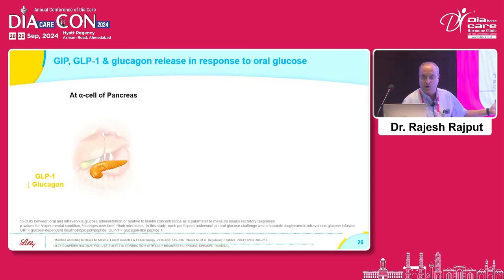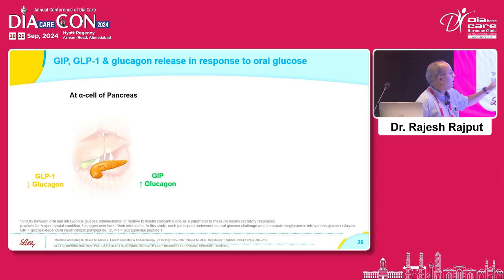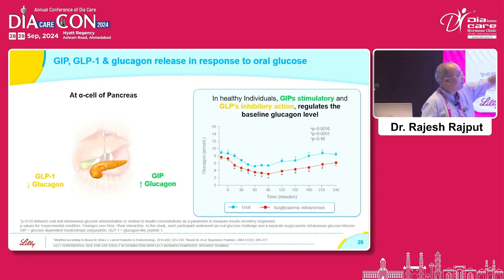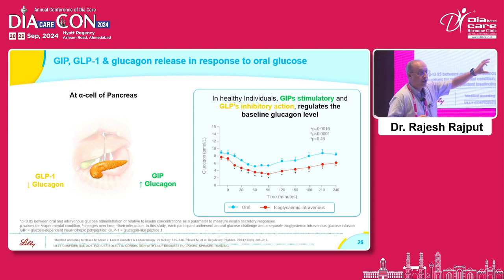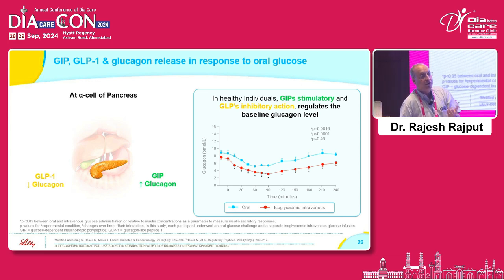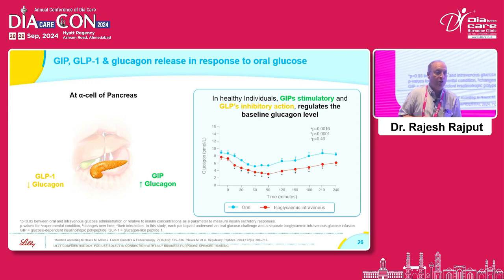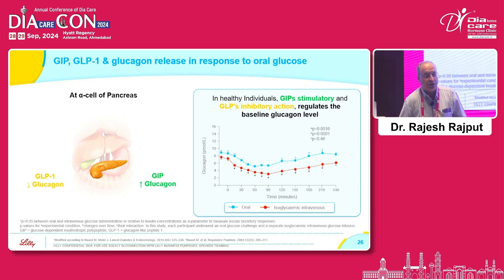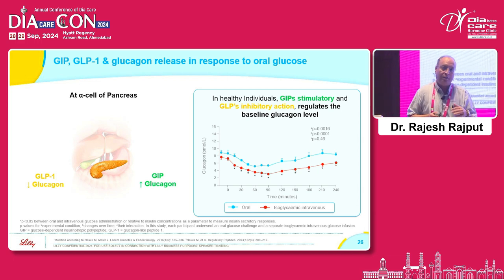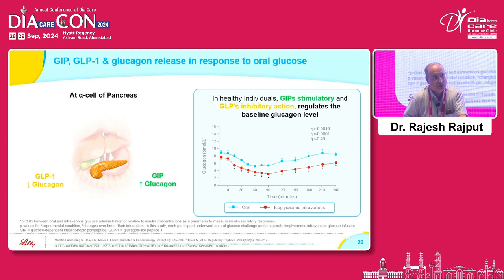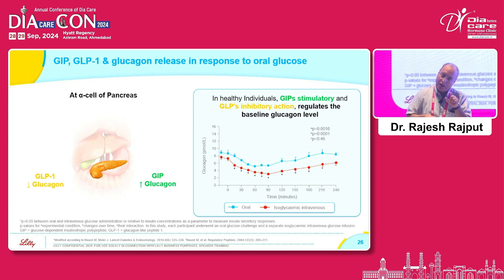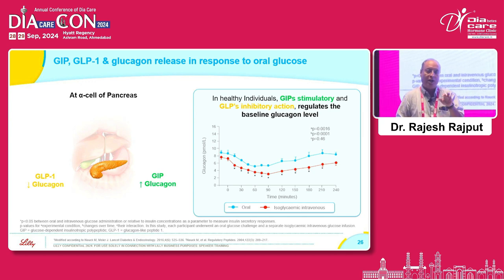GLP-1 and GIP act synergistically on alpha cells, maintaining a physiological level of glucagon. So when someone tells you that GIP results in increased glucagon secretion, do not jump to the conclusion that this is harmful. In fact, five years down the line we are going to have triple agonists — GIP, GLP, and glucagon agonist — because glucagon is also required for normal health and well-being and serves a number of good functions.